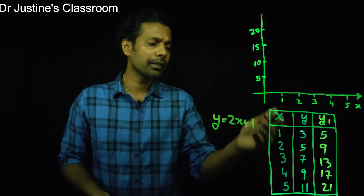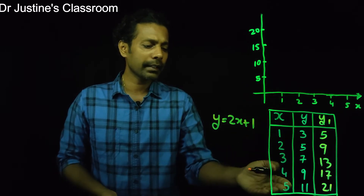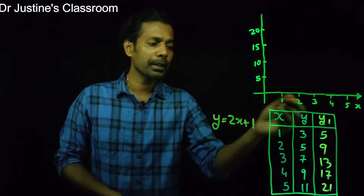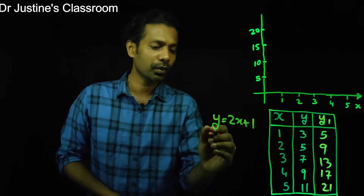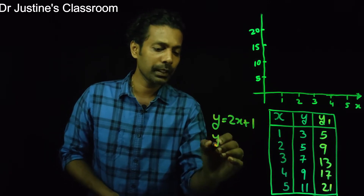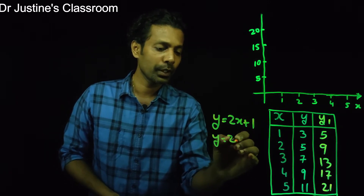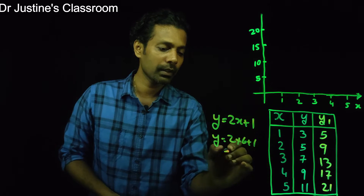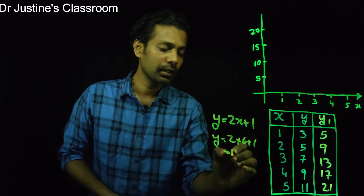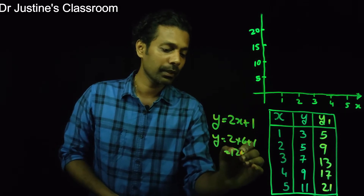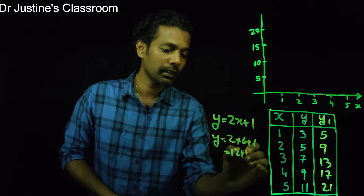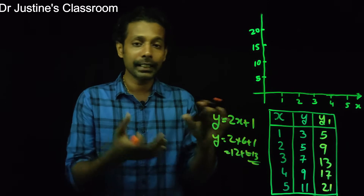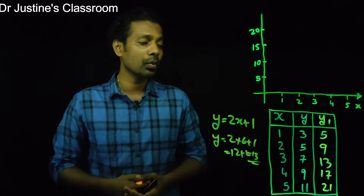For example, what if the value of X is 6? Y would be 2 into 6 plus 1, which is 12 plus 1, giving 13. It's a predictive relationship between two variables.